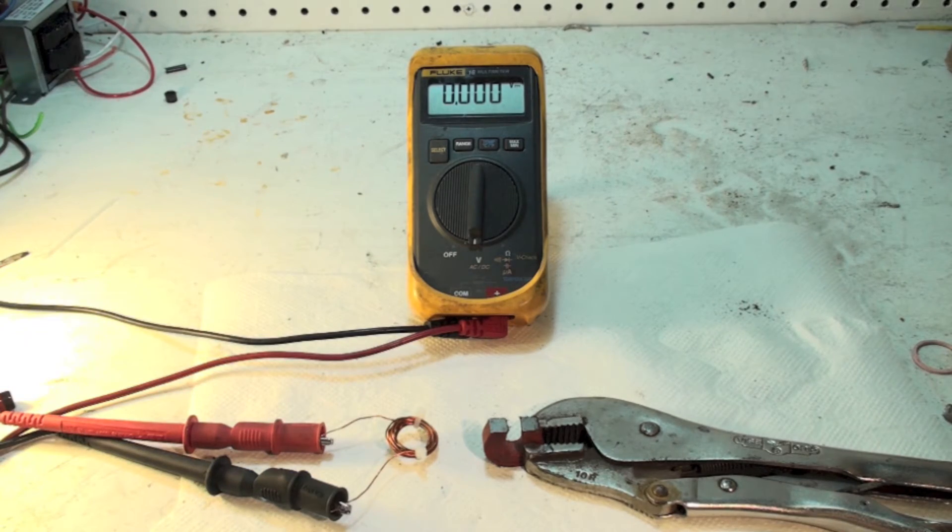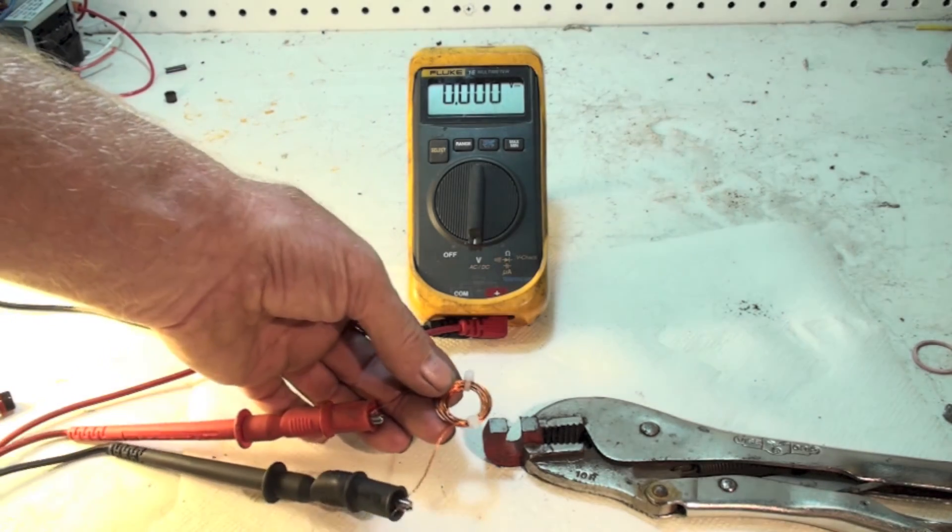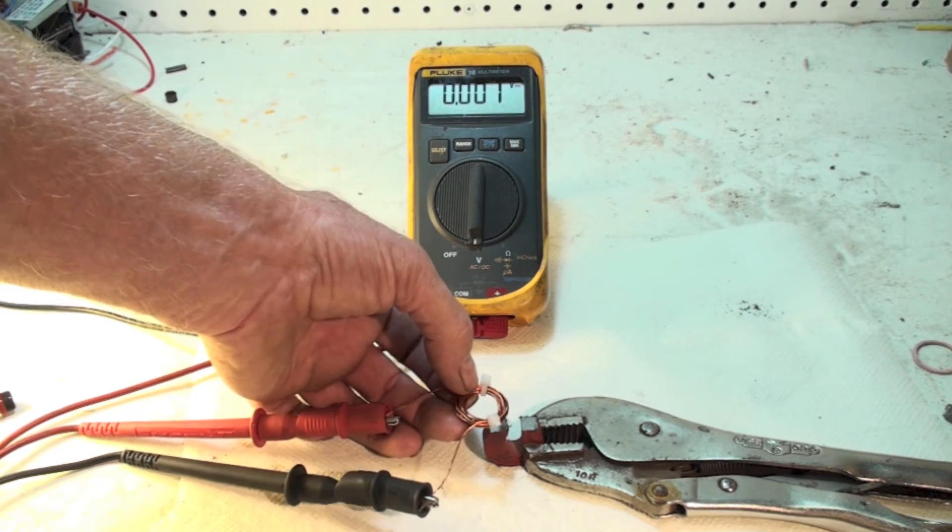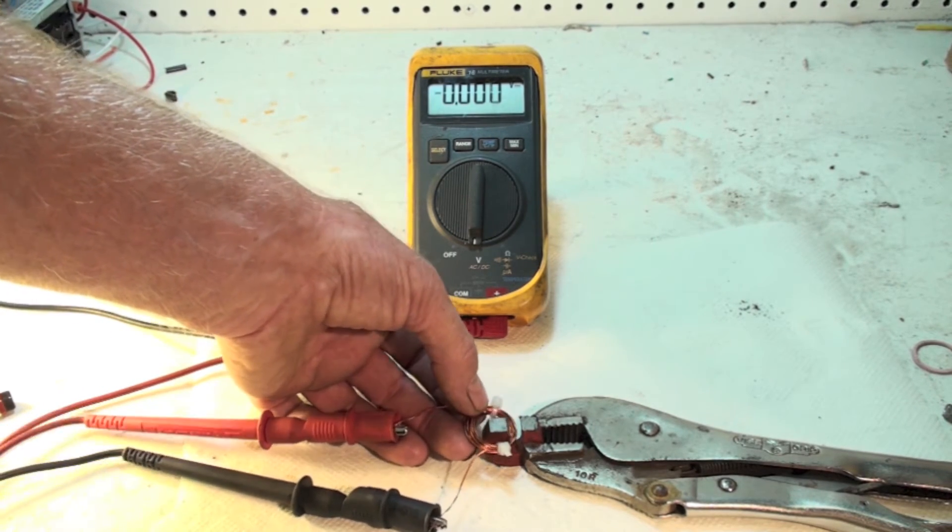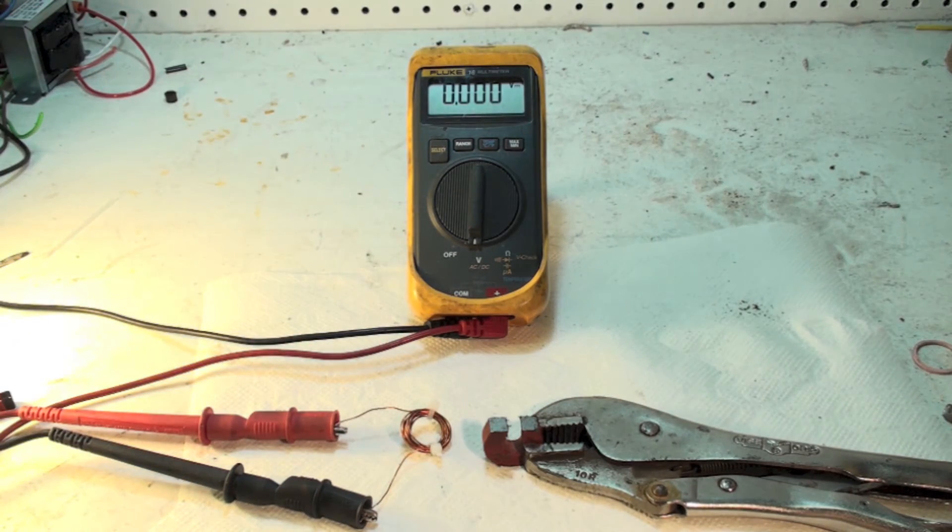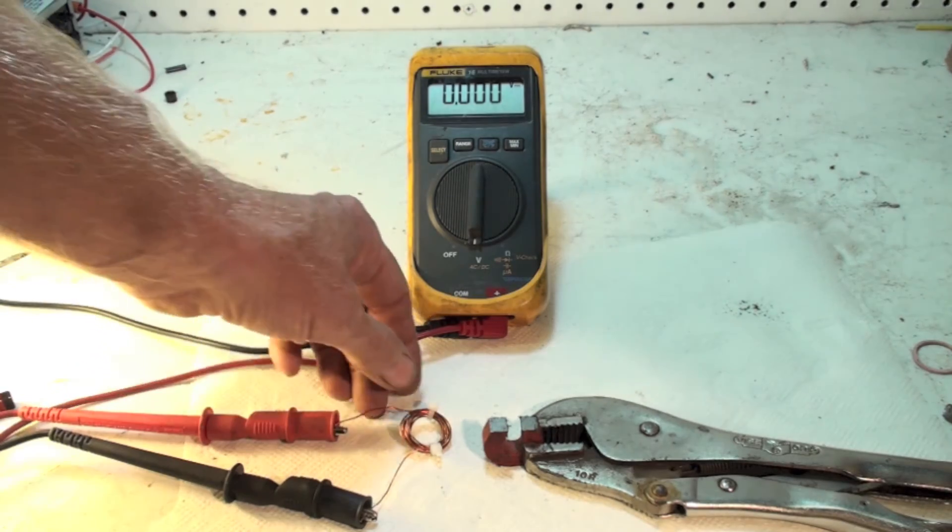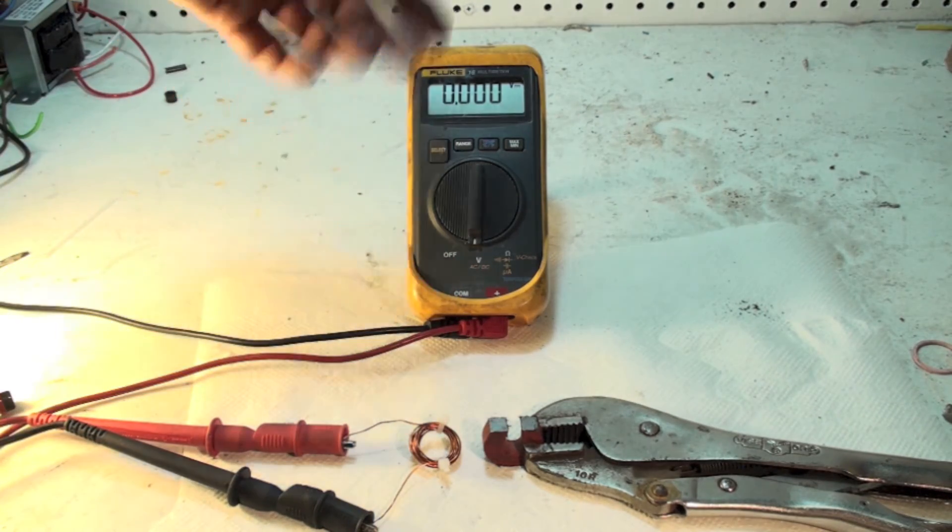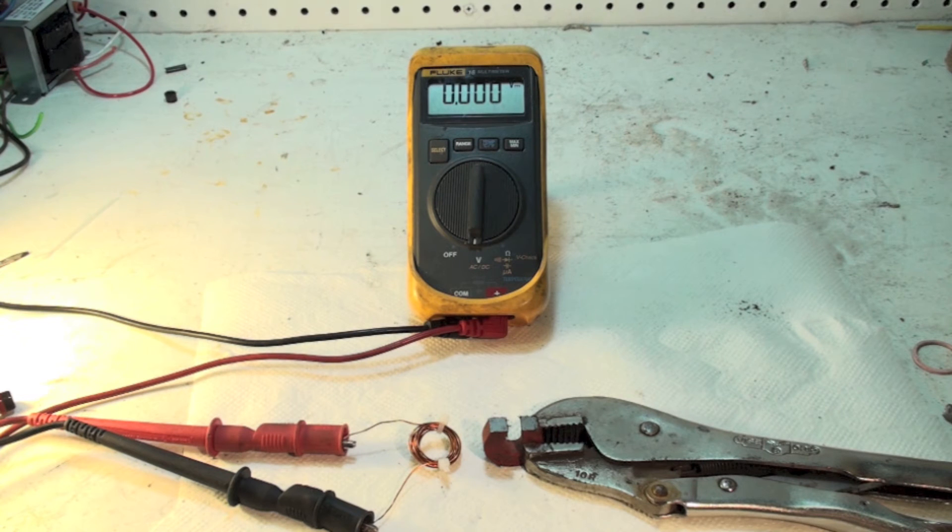I produce power by taking these windings and crossing the lines of force. Every time I do that, I get power induced. Notice there is no electrical connection between the magnet and the meter. The meter is, I'm calling the meter my load at this point.